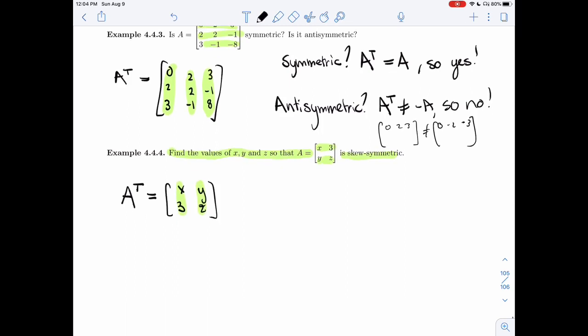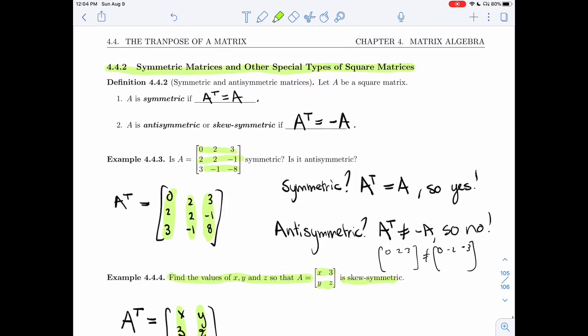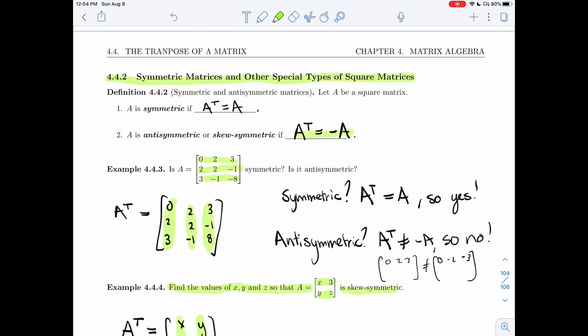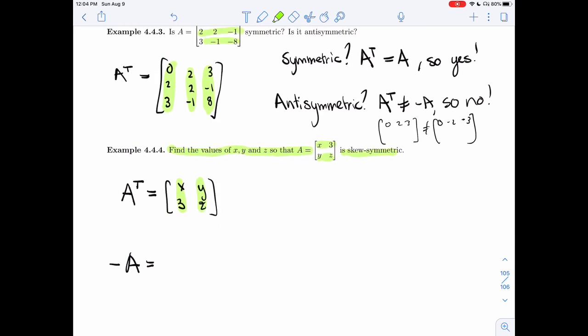Now I want this to be the same as minus A. That's what the definition says. A transpose is minus A. So minus A just means put minuses in front of each. So we want these two to be equal.